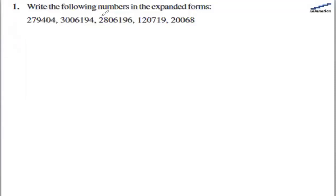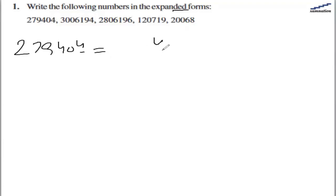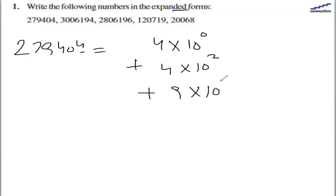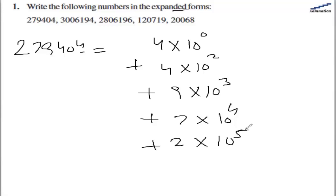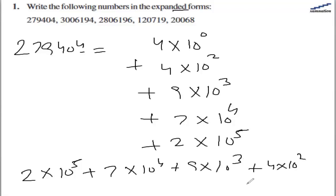In this question we need to write the following numbers in expanded format. So let's see the first one. We have 4, and 10 raised to the power 0, then 4 times 10 raised to power 2, plus 9 times 10 raised to power 3, then 7 times 10 raised to power 4, then 2 times 10 raised to power 5. So this will be the answer — it can also be written like this. So this is the answer for the first part.